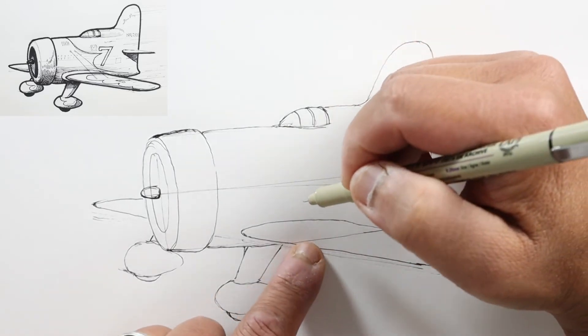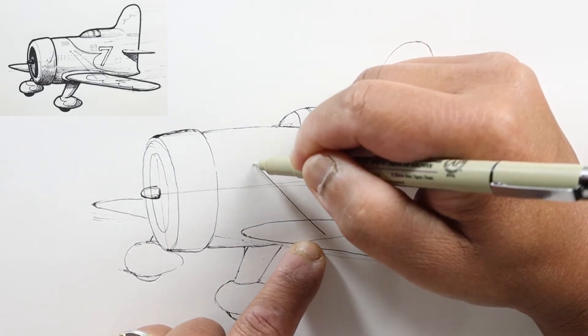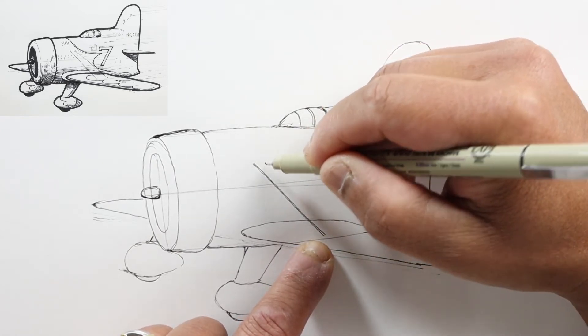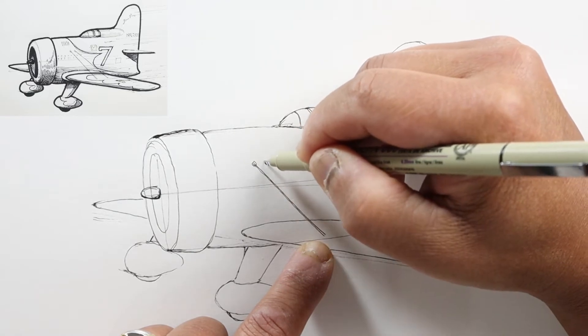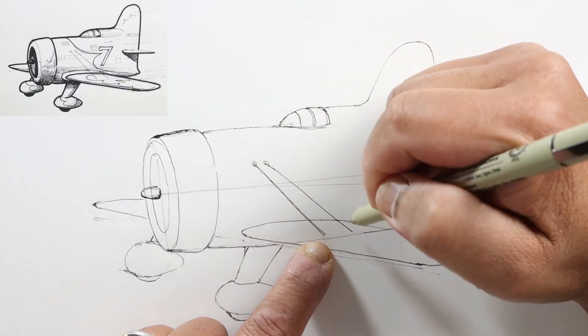Then we've got a couple wires that help to hold the wing. These attach right here to the body and taper a bit to attach to the wing.